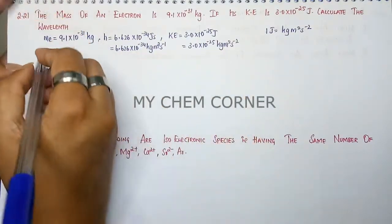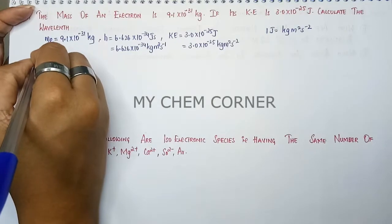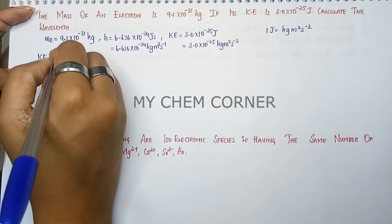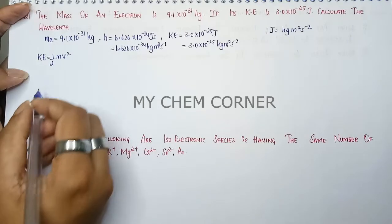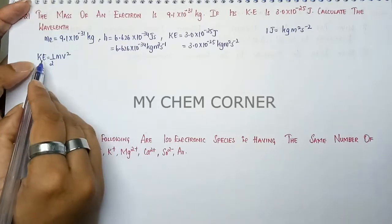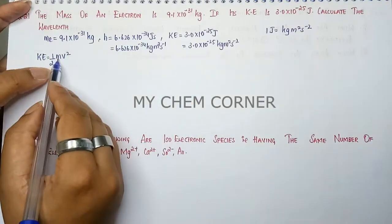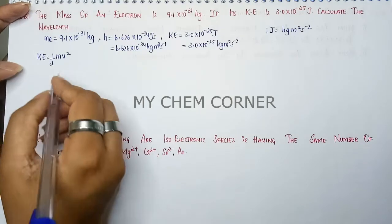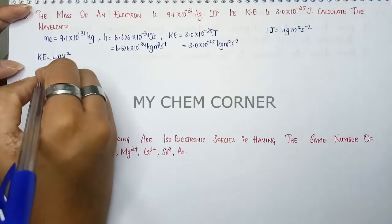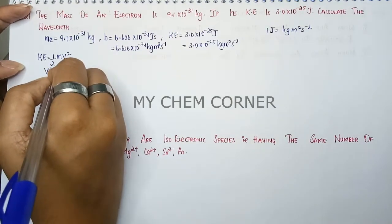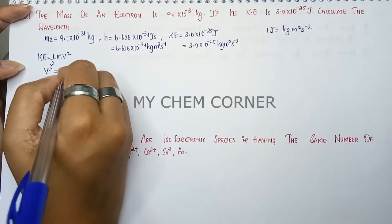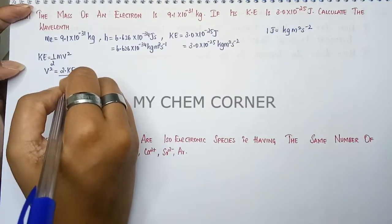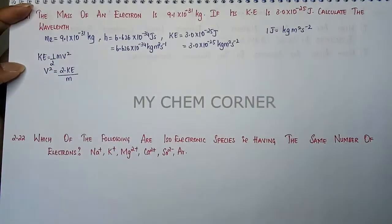We use the formula for kinetic energy: KE = ½mv². We know kinetic energy and mass, so velocity is what we need to find. Rearranging: v = √(2 × KE / m).